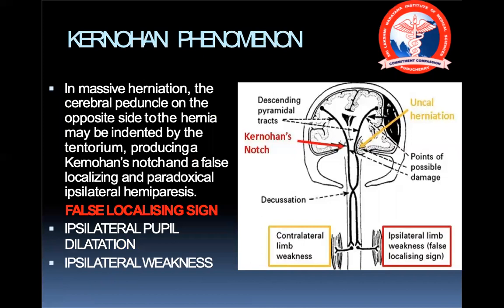An important phenomenon is the Kernohan notch. In a massive herniation, the cerebral parenchyma on the opposite side to the hernia may be indented by the tentorium itself, producing a Kernohan notch — a false localizing sign causing paradoxical ipsilateral hemiparesis. Although we expect contralateral paralysis and ipsilateral pupillary dilatation, because of herniation of the affected side, the opposite side at the notch is also affected, causing ipsilateral weakness.